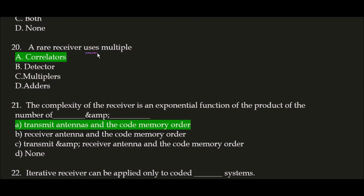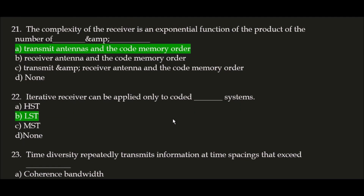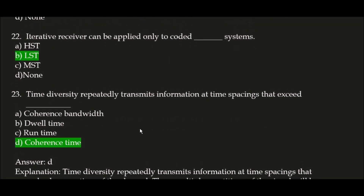A RAKE receiver uses multiple correlators — the correct answer is option A. Next question: the complexity of the receiver is an exponential function of the product of the number of — correct answer is option A — transmit antennas and the code memory order. Next question: an iterative receiver can be applied only to a coded LST system; the correct answer is option B, LST.